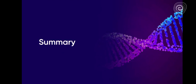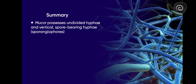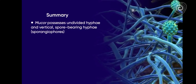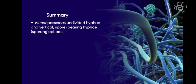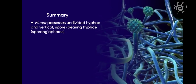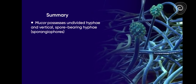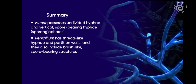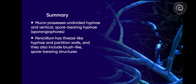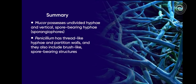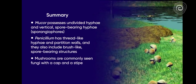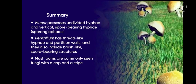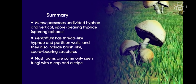To summarise, let us take a look at three most common types of fungi. Mucor, which possesses undivided hyphae and vertical spore-bearing hyphae. Penicillium has thread-like hyphae and partitioned walls, and they also possess brush-like spore-bearing structures. The third type is commonly seen mushrooms with a cap and a stipe.